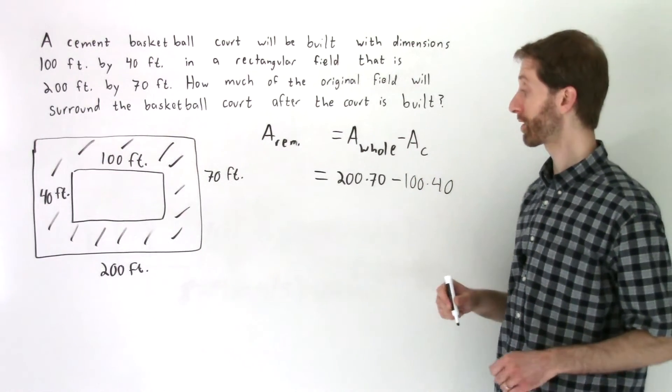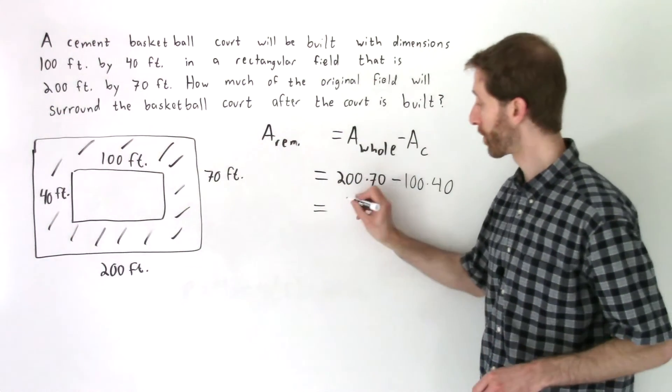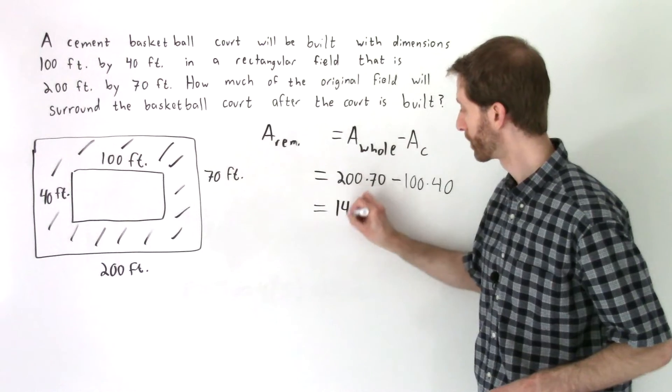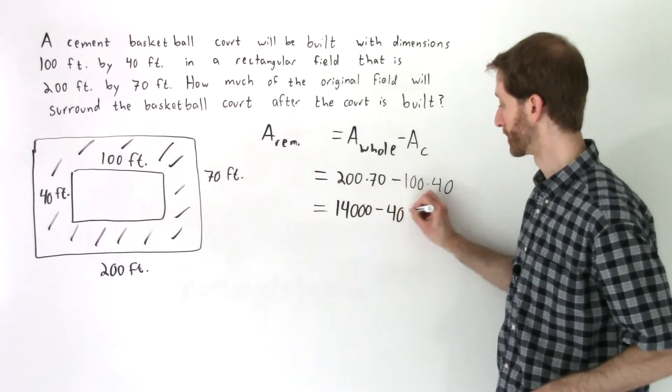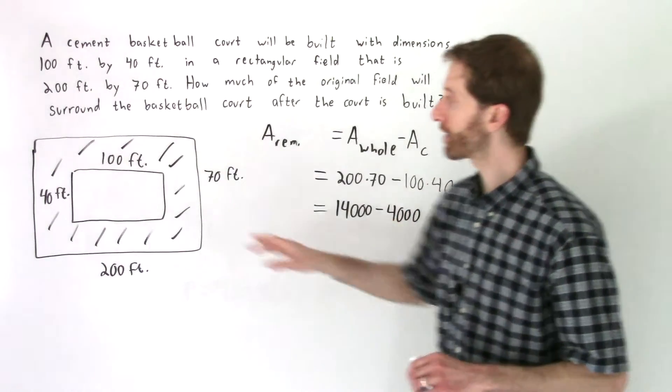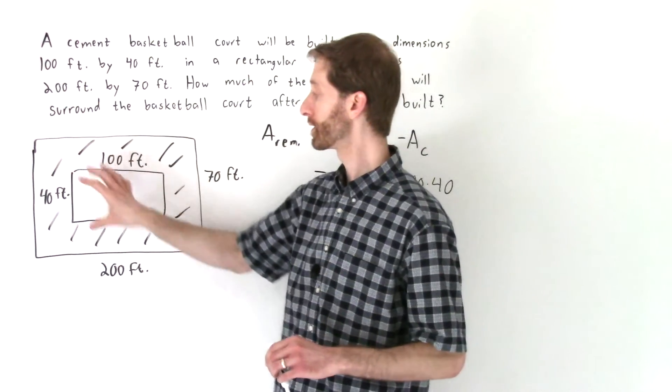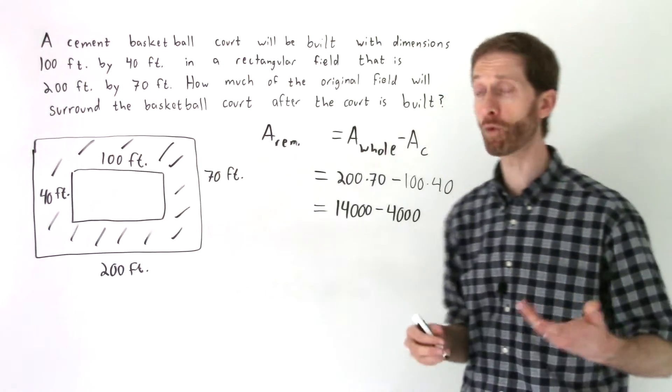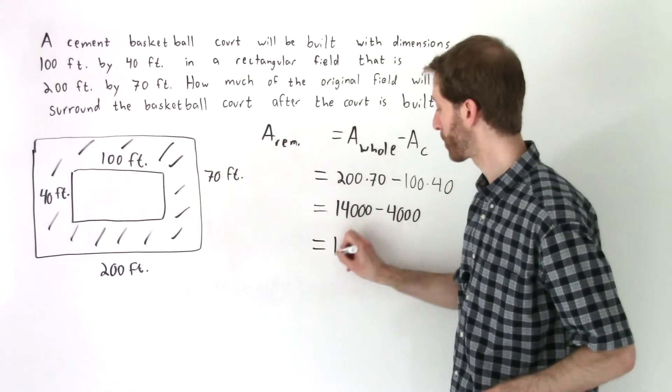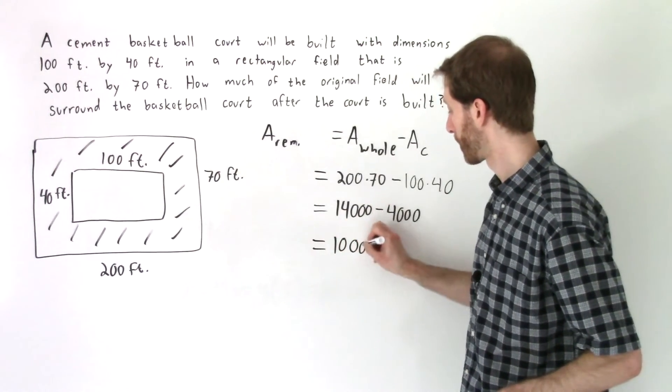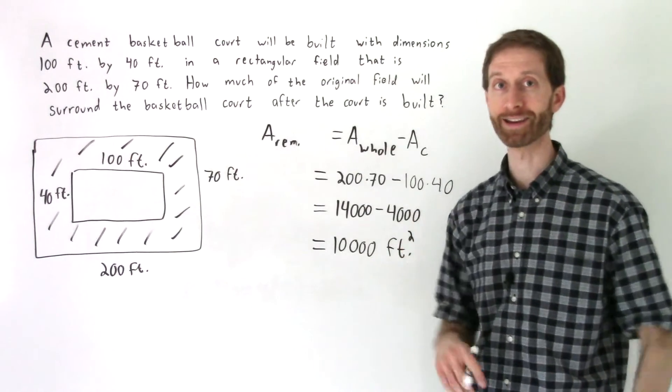From here, we do some simple calculations and we'll have our answer. 200 times 70 is 14,000. That is a large number minus 100 times 40, which is 4,000. The 14,000 represents the area in square feet of the entire field. Then when we put the court on it, we took up 4,000 square feet. And when we subtract the two of those, we get the remaining area around, which is 10,000 square feet.